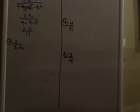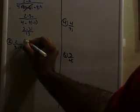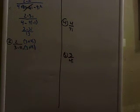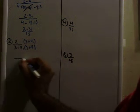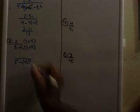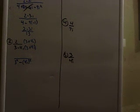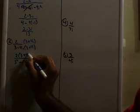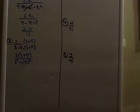So I'm multiplying by 3 plus 4i. And when I do that, I'm just going to use the principle of difference of two squares. I already know in the denominator, I'm going to have 3 squared. Minus 4i squared. In the top, I'm going to have 2 times 3 plus 4i.